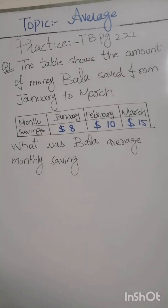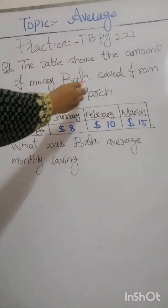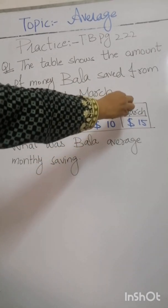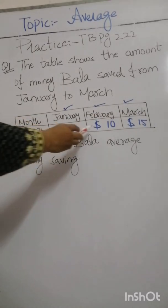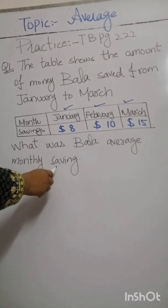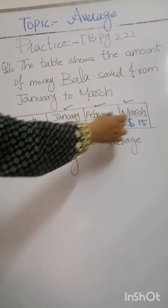Bismillahirrahmanirrahim. Assalamu alaikum students. Today we have a topic: average. We have practice questions from our textbook page number 222, question number one. The table shows the amount of money Bala saved from January to March. The total amount saved in three months is given, so we have to find the average monthly saving. First of all, we have to find the total amount.